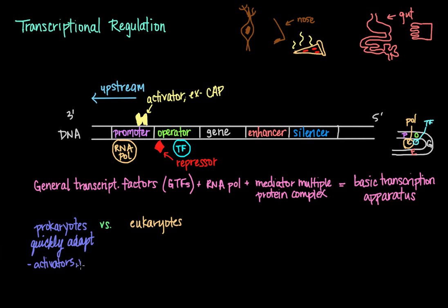So a combination of activators, repressors, and enhancers, at least in the case of prokaryotes, determines whether a gene is transcribed.